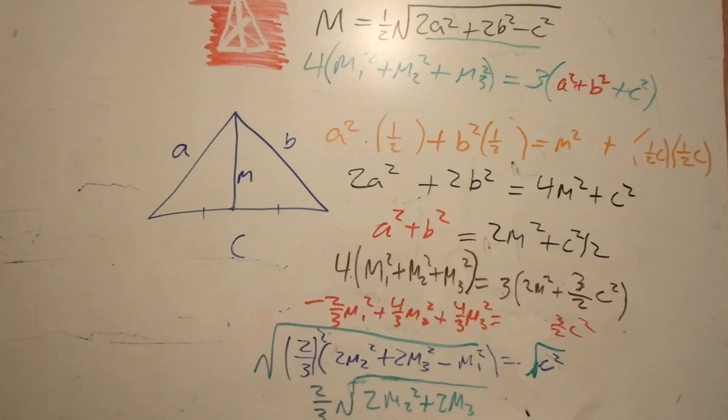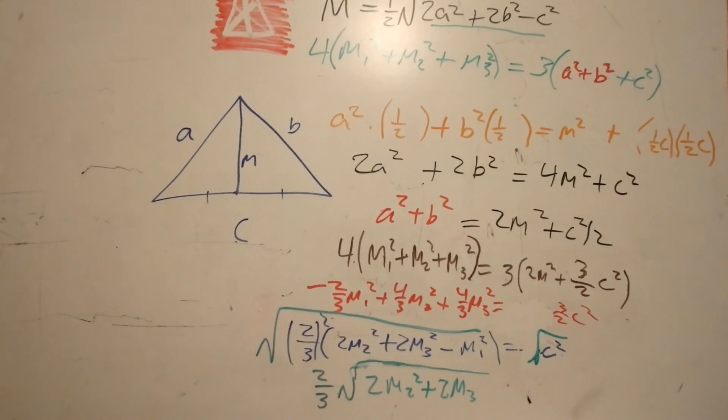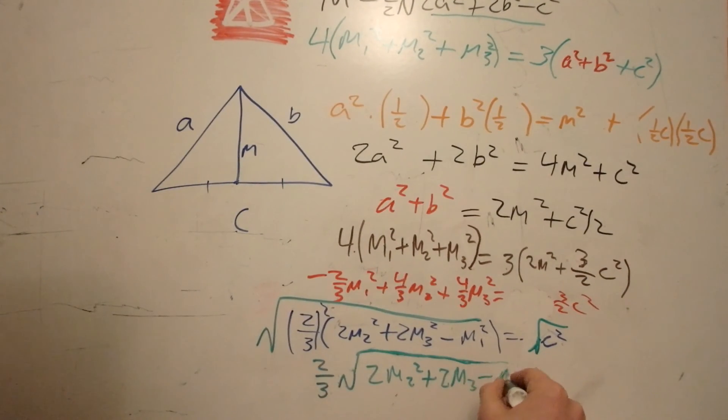That way, we can take the square root of both sides while the 2 thirds just goes to 2 thirds. And we can just put all of this under the square root here is equal to c.